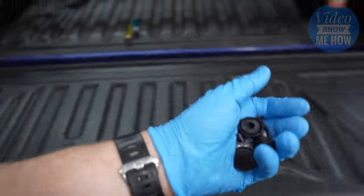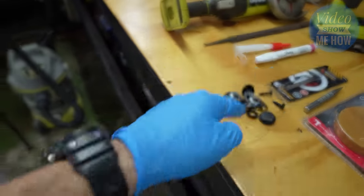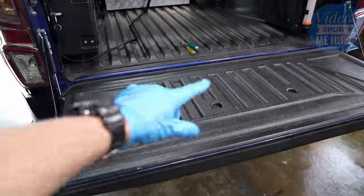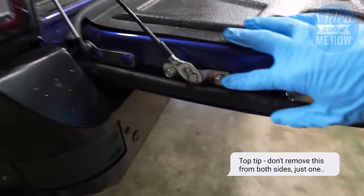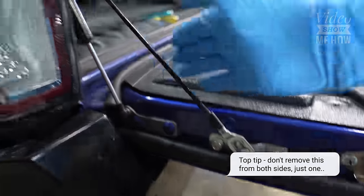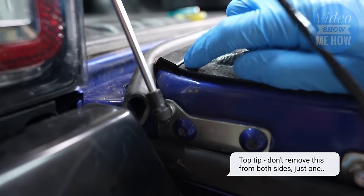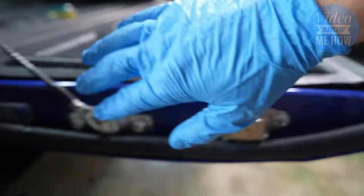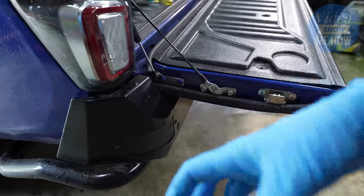Once you've got all of these out, you can put those to the side. We won't be needing those again. Then it's just a matter of getting the top section out. There's an easy way of doing this. Basically, you want to take off one of these holders. You can see there's a slot in there. Once there's nothing in the way, you can slide this whole lot out towards you.